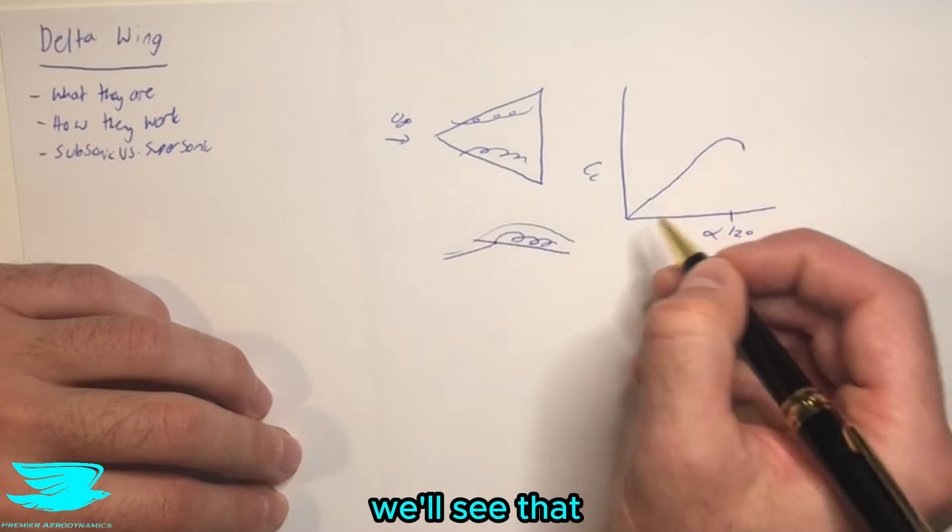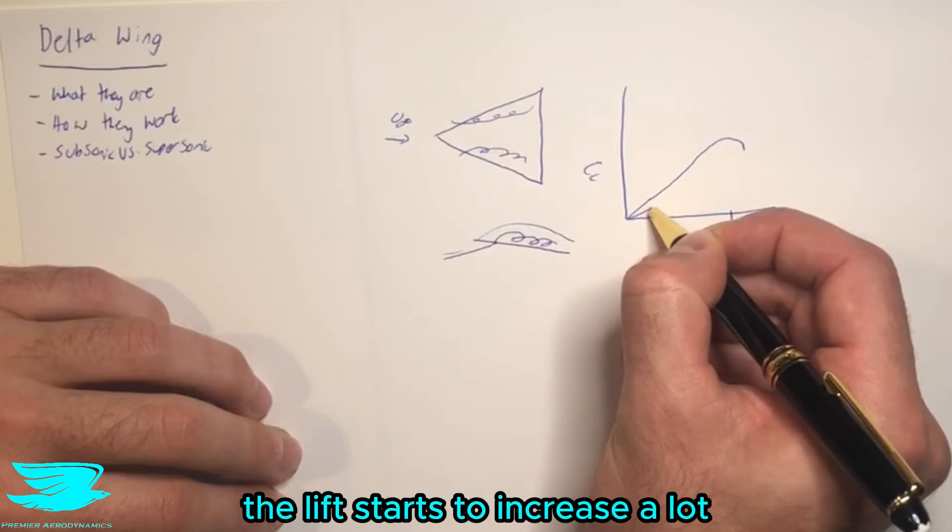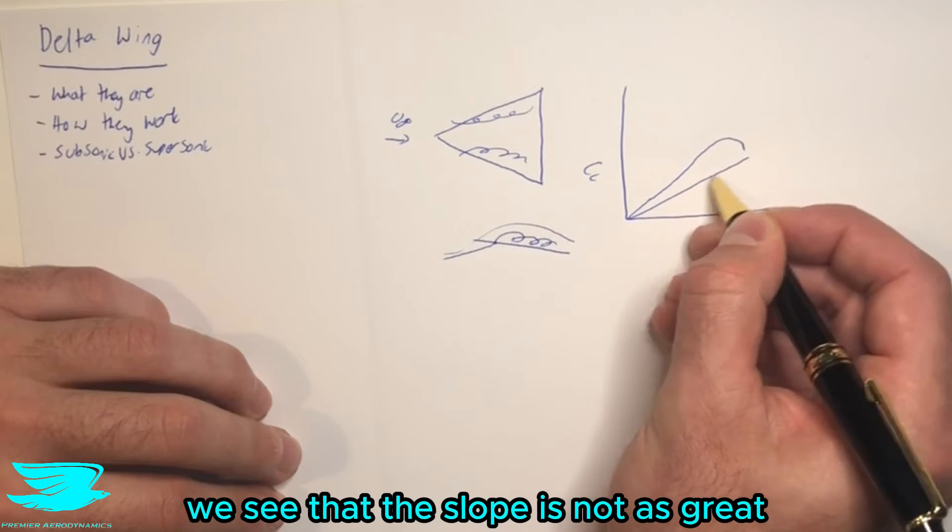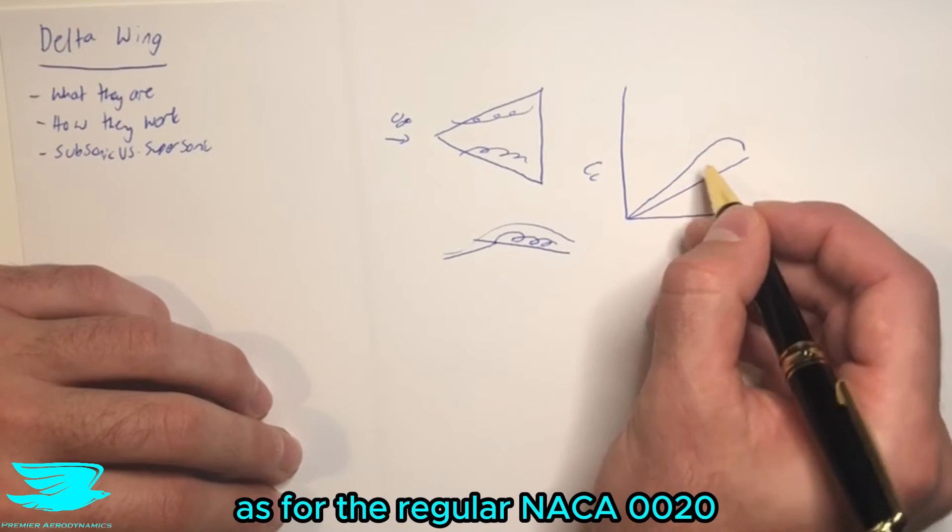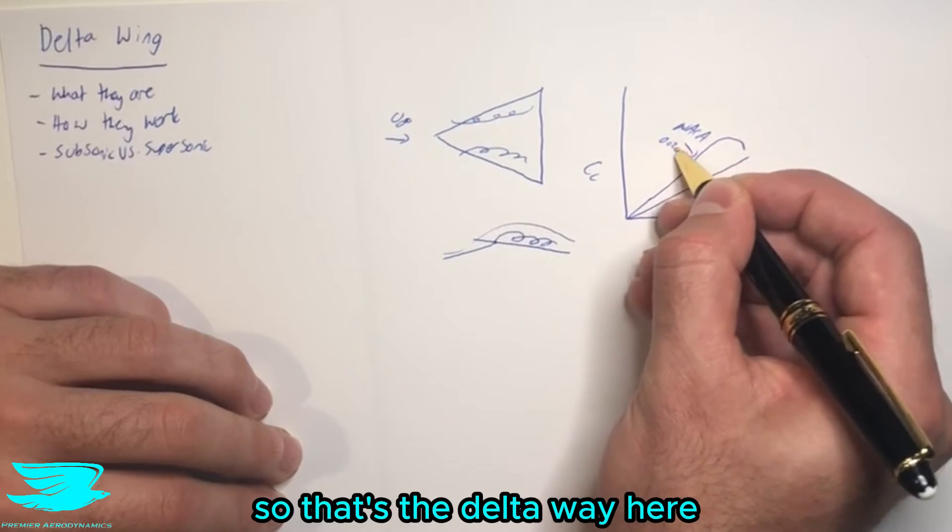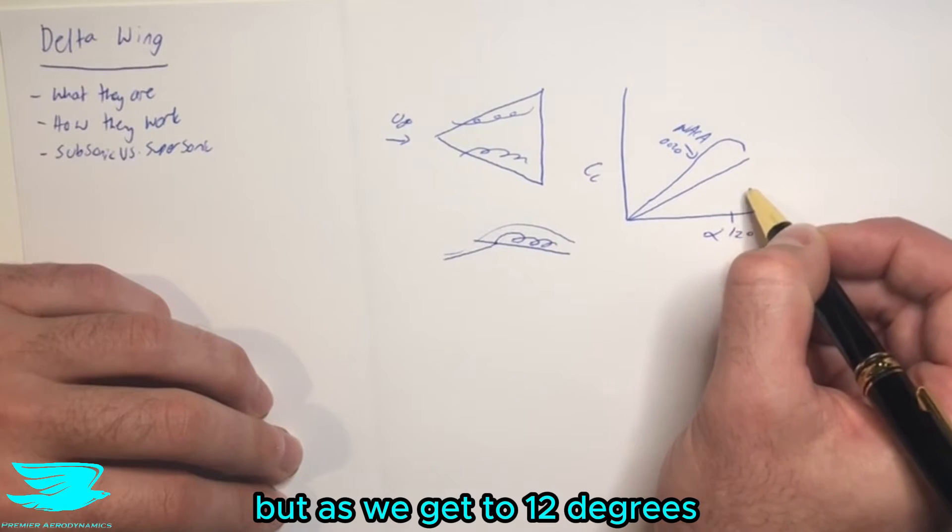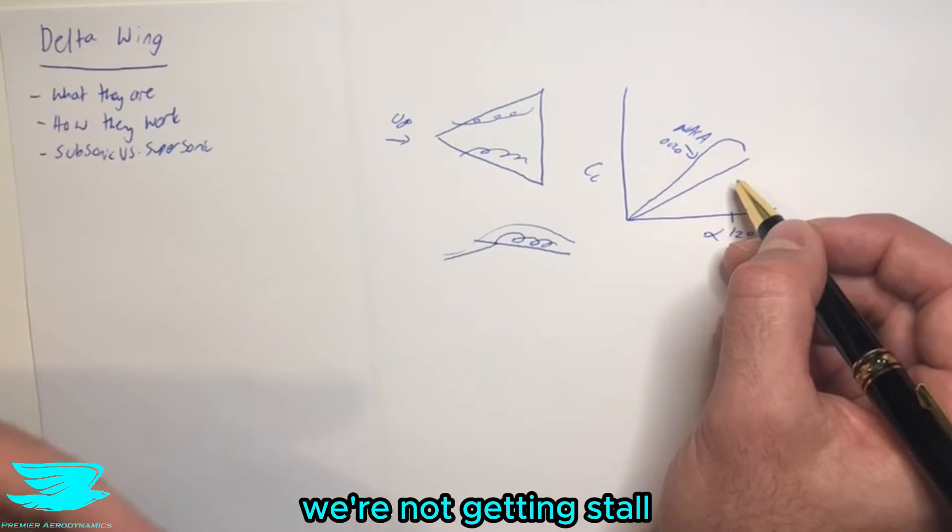For a delta wing, on the other hand, we'll see that the lift starts to increase a lot, and to begin with, we see that the slope is not as great as for the regular NACA 0020 airfoil. So that's the delta wing here. But as we get to 12 degrees, we'll notice that the flow is not separating, we're not getting a stall.